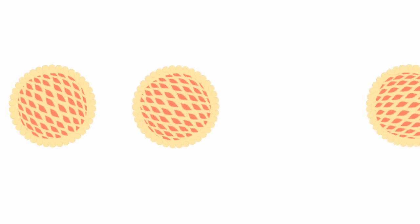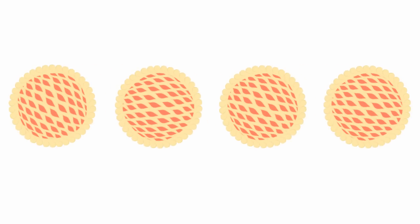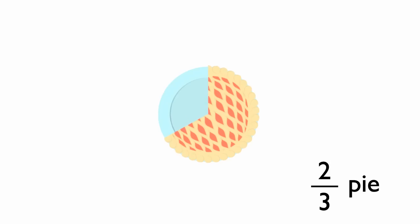You know how to count 0, 1, 2, 3, 4, and so on. But what if you have an amount in between 0 and 1, like this?